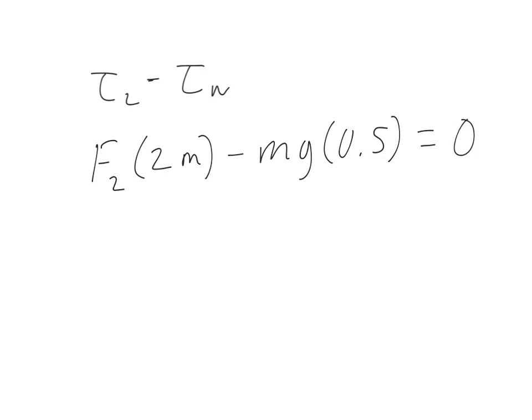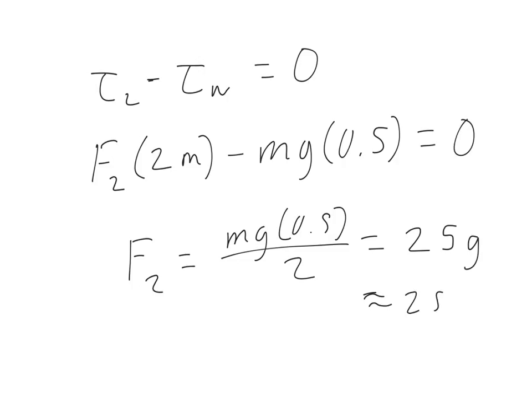This sums up to zero, because these two torques need to add up to zero, so that way there's no angular acceleration. We're in a stable situation. So I can just solve for F2. Just a little bit of algebra then. Mg 0.5 divided by 2. And I said for this case the mass was 100 kilograms. So this works out to exactly 25g, which is going to be around 250 newtons.